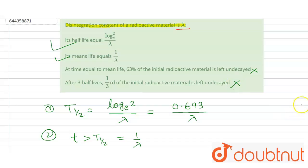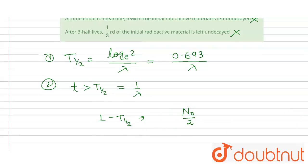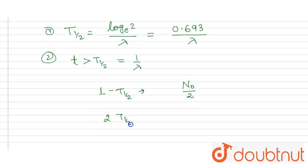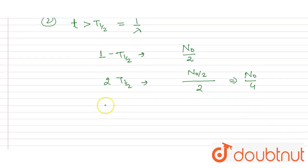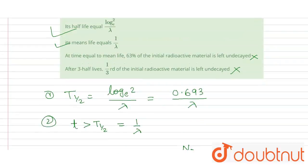Similarly, we cannot say that after three half-lives, one third of the initial radioactive material is left undecayed. In the first half-life the material will be N₀/2; in the second half-life it becomes N₀/4; and in the third half-life it becomes N₀/8. So after three half-lives the material is N₀/8, making that option incorrect.